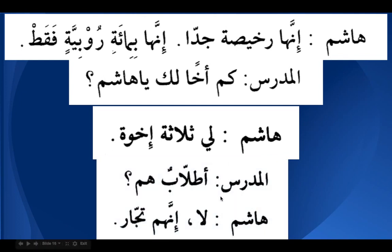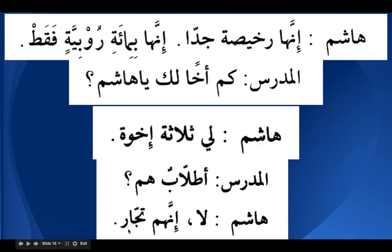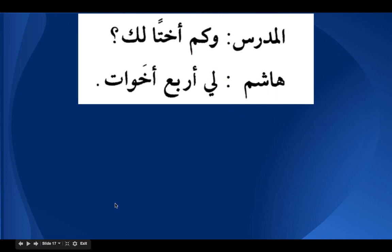The teacher asks: A tulabun hum — are they students? Hashim says: La, inna hum tujjarun — no, indeed they are merchants. Tujjarun is the plural of tajir on the pattern fu'alun. The teacher asks: Wa kam ukhtan laka — how many sisters do you have? Ukhtan is tamiz. Hashim says: Li arba'u akhwatin — I have four sisters. After arba'u it is always mudaf ilayhi, so it is akhwatin, not akhwatun.